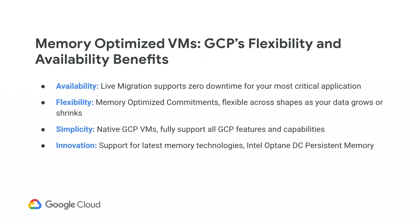My favorite part about memory-optimized VMs is that they continue to give you all the benefits of Google Compute Engine. They are fully flexible and provide very high availability. With memory-optimized VMs, you continue to get live migration, supporting zero downtime for your most critical applications. Live migration is simply our way of making sure maintenance events are transparent to your workloads — when Google Cloud sees a maintenance event is about to happen, we transparently spin up another version of your VM and copy all the data over so you don't experience any downtime.